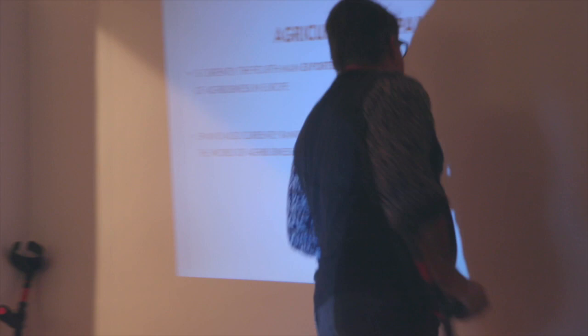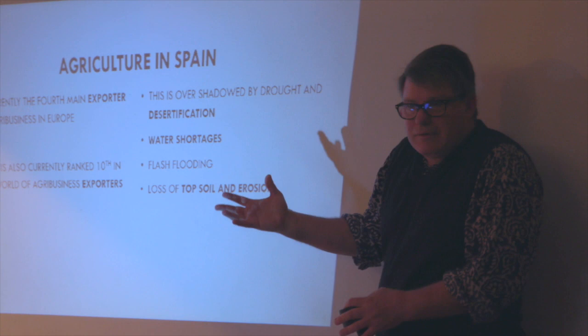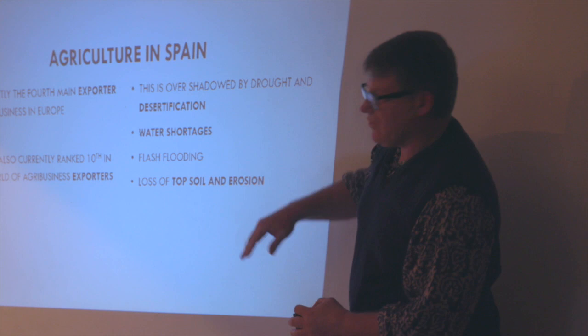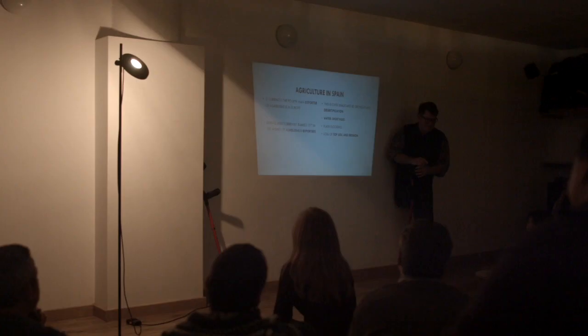It's overshadowed by drought - what are we going through? Drought. Desertification. Water shortages. Flash flooding. And loss of topsoil and erosion. It's important that you understand the effect of that.